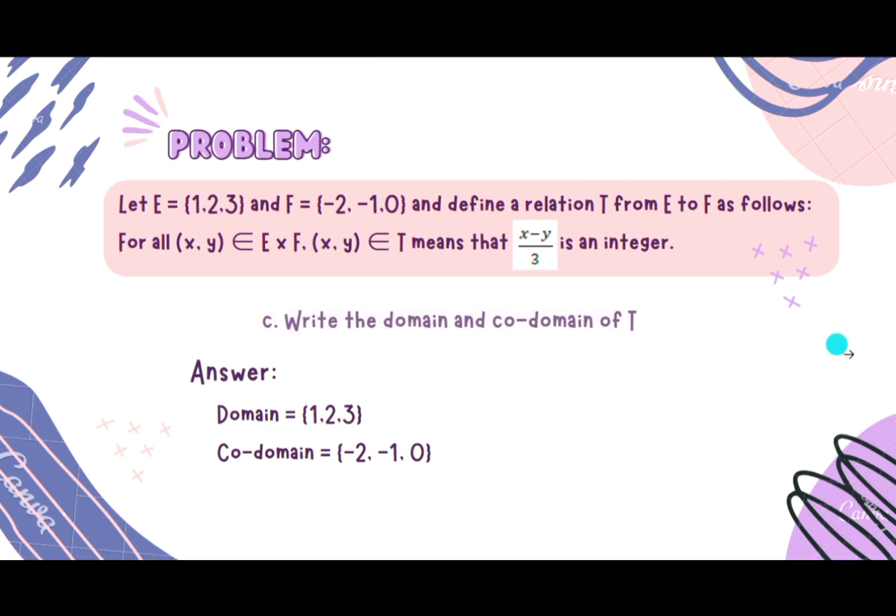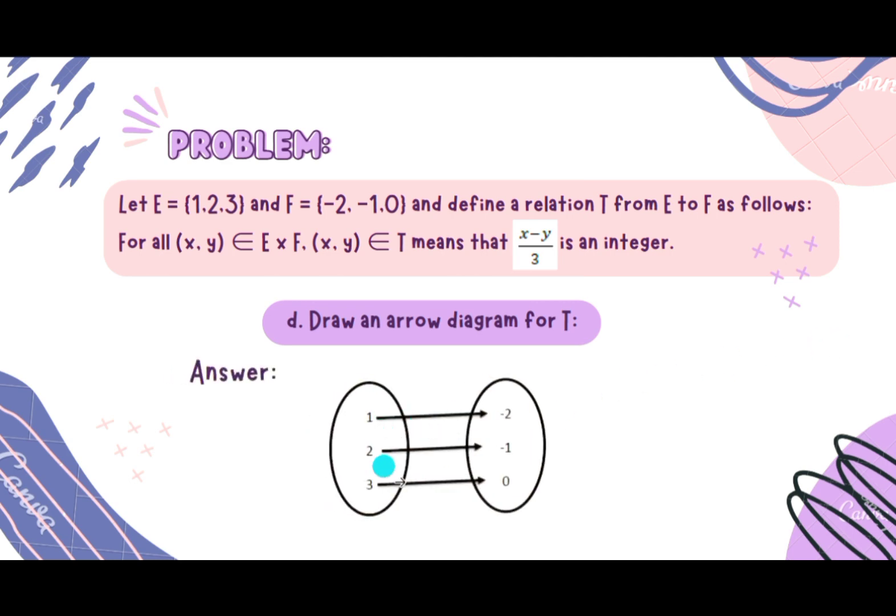Next, letter D: Draw an arrow diagram for T. We just need to make a diagram of our ordered pairs. We have our domain here on the left and our co-domain on the right. We have 1 and -2, 2 and -1, 3 and 0.